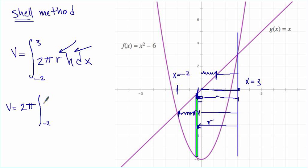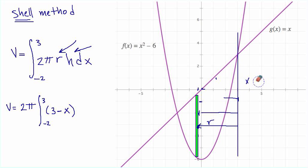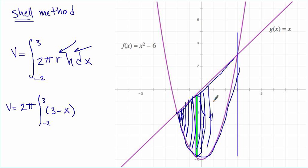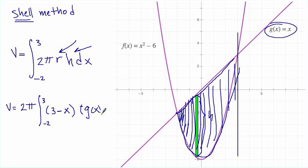So the volume is 2π times the integral from negative 2 to 3, where r is 3 minus x. Now for the height h: at any moment, h is g(x) minus f(x) — the top function minus the bottom function — giving just that little strip height at any point.